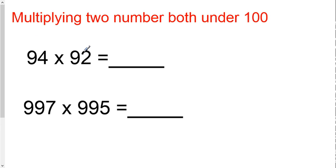So each number is under a hundred by a little bit. You take each number. How much under a hundred is 94? 6. How much under a hundred is 92? 8.